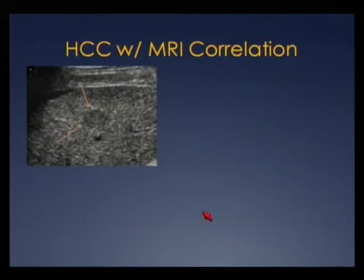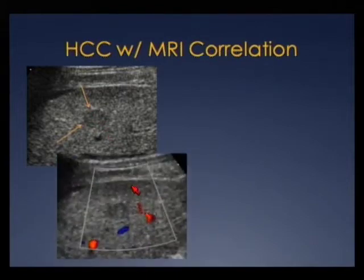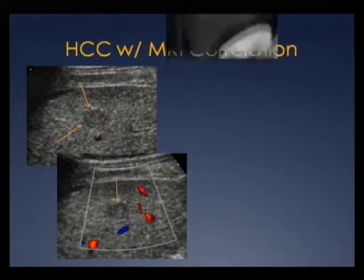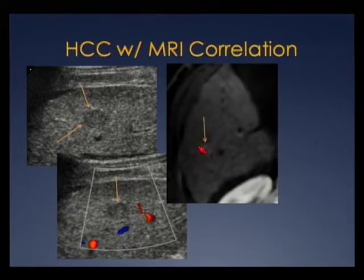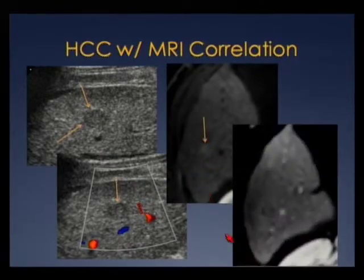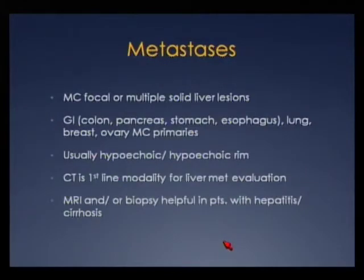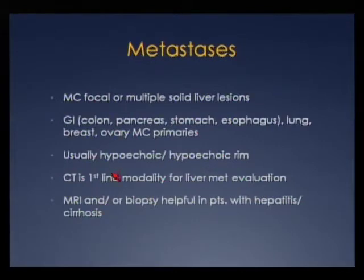Here's HCC with MRI correlation — a hypoechoic liver lesion with no increased vascularity on ultrasound, but MR shows subtle hyper-enhancement in the early phase and washout in the delayed phase, confirming hepatocellular carcinoma. Metastases are the most common solid liver lesion, usually from a GI primary, though lung and breast are other common primaries. Mets are usually hypoechoic but can have a highly variable appearance. For mets surveillance we usually do CT, though MRI or biopsy may help in patients with hepatitis or cirrhosis.